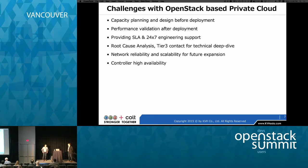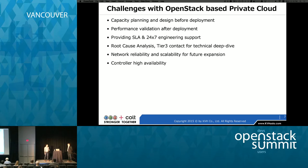One of the biggest challenges is stability on the networking. When we decided to go with OpenStack, Neutron was not very stable — especially network node redundancy and high availability, which were quite sensitive. Another challenge is high availability on the controller. Without those requirements being satisfied, we cannot say we are 100% confident with a managed private cloud.